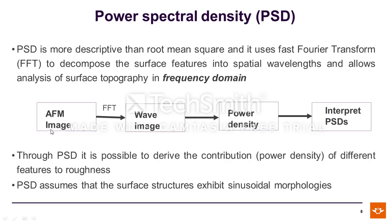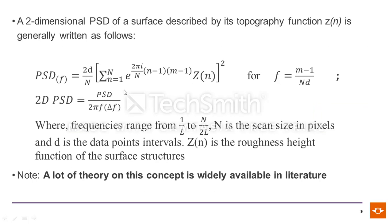What happens is: you get the AFM image and subject it to a fast Fourier transform algorithm, which gives you a wave image. You then determine the power densities of these wave images, and you can interpret the profile extracted from those images. It is possible to derive the contribution or power density of different features to the roughness. This method assumes that the surface structures exhibit sinusoidal morphologies. This is a symbolic expression of two-dimensional power spectral density, where Z(n) is the height function of the surface.